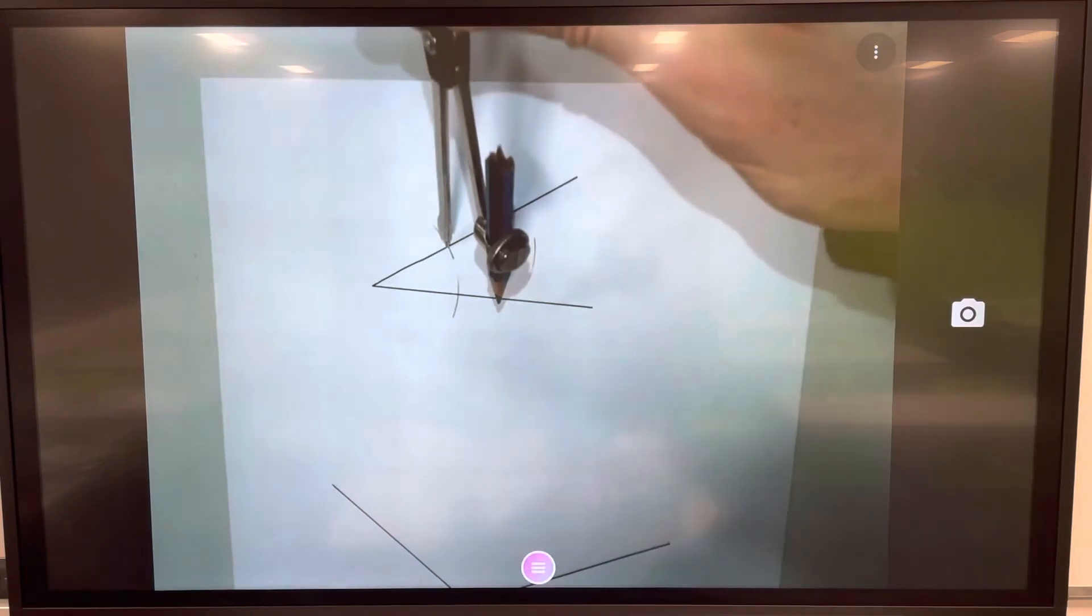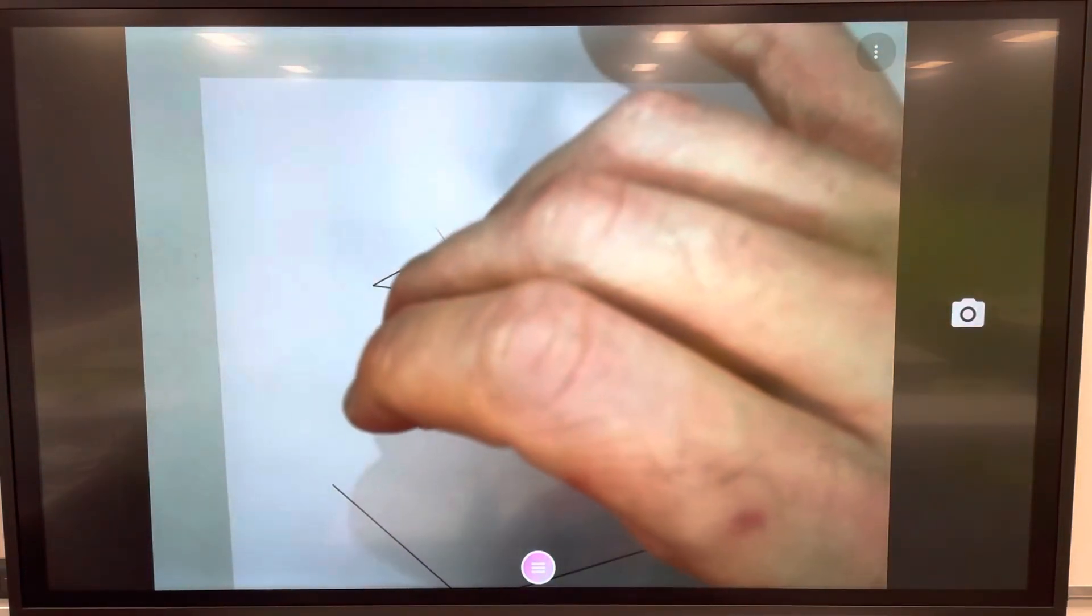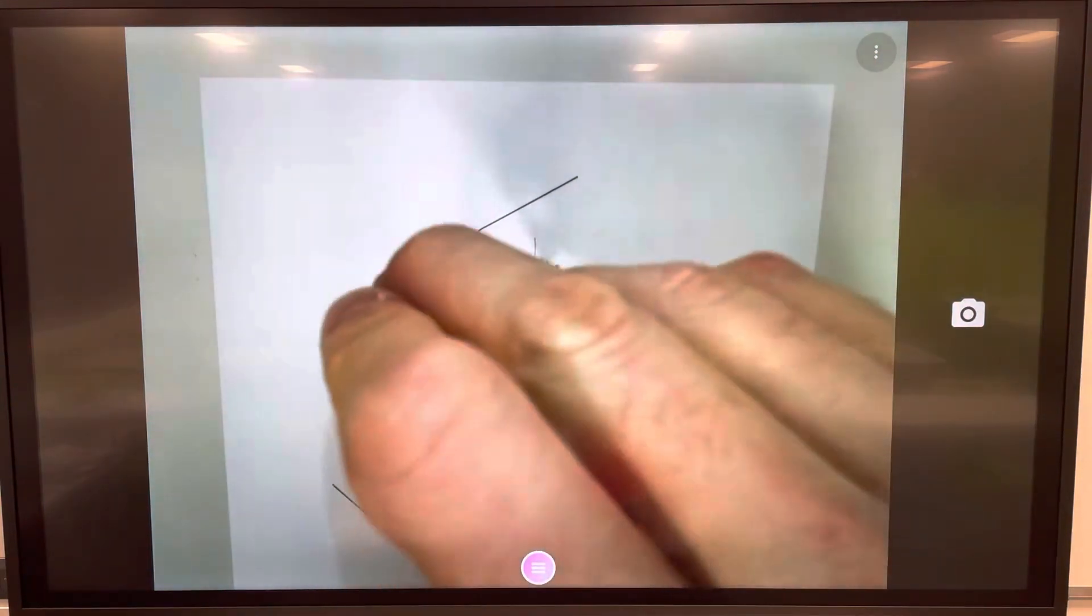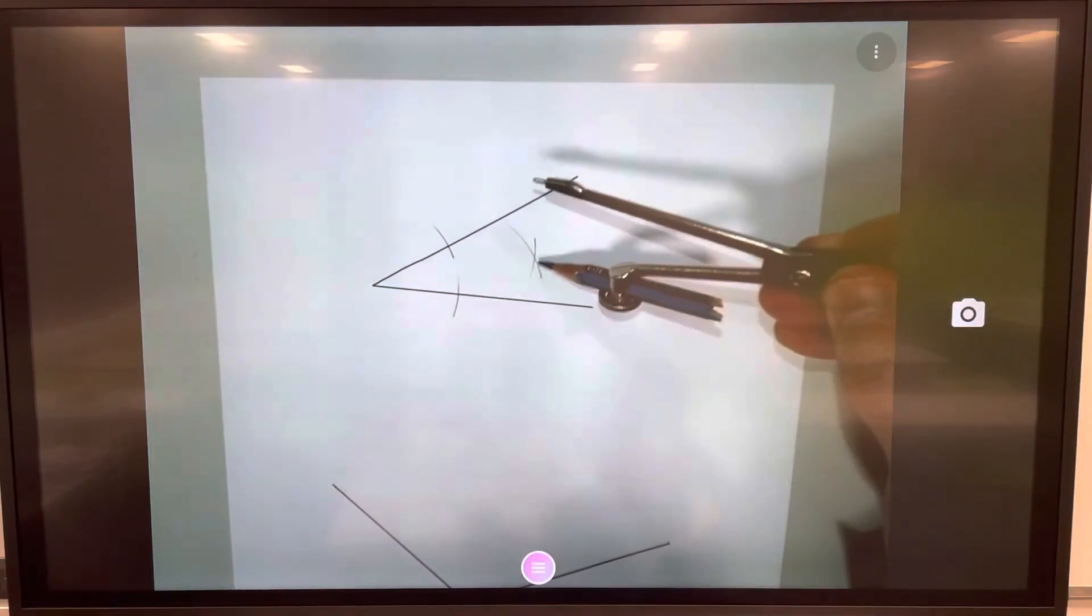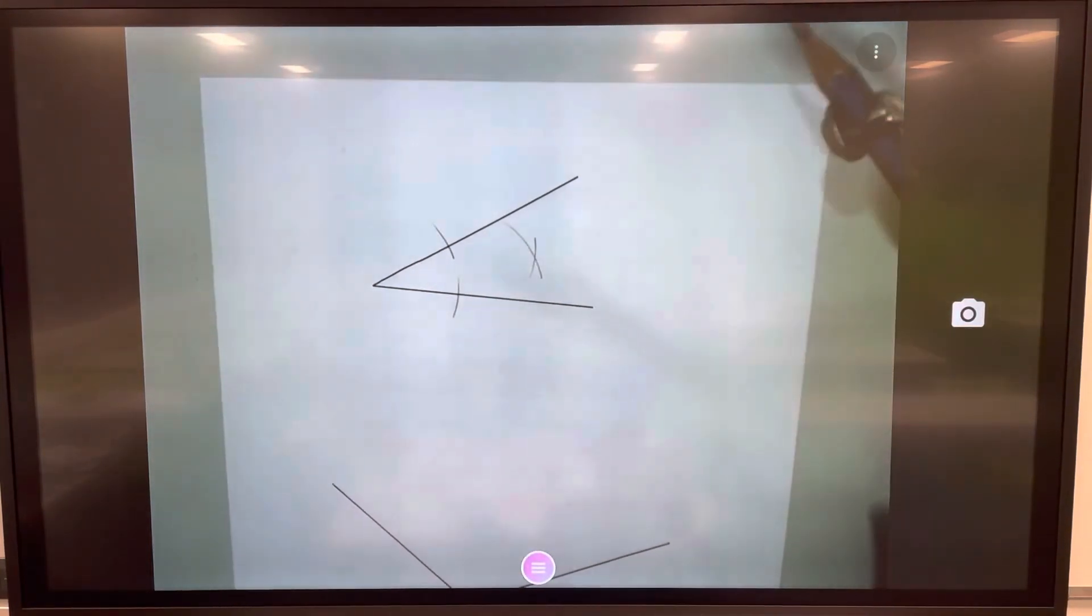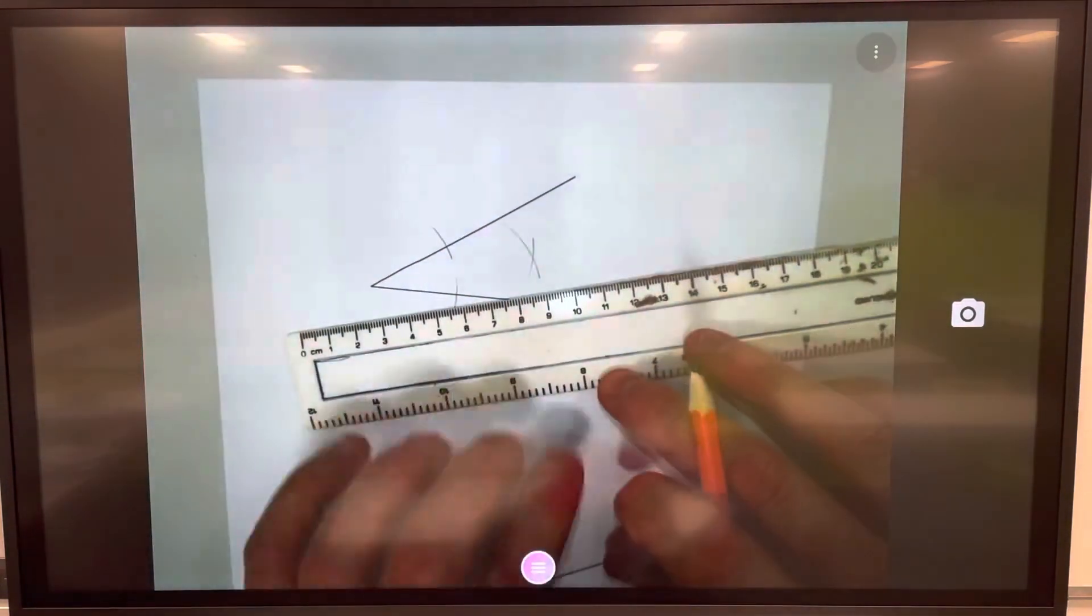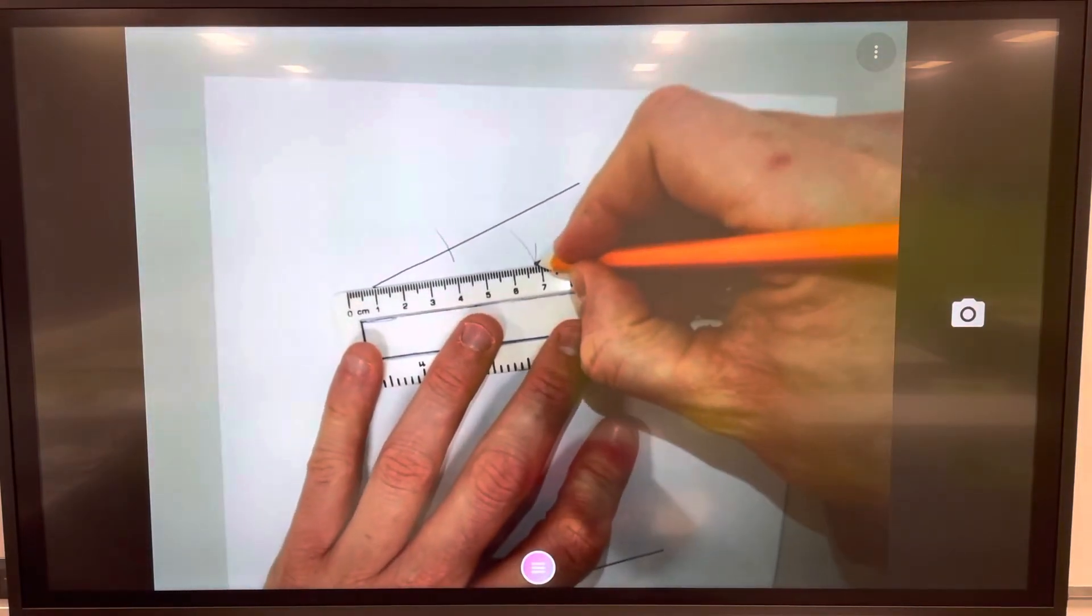I'm going to repeat that from the other side. I'm going to put my sharp point on that point there and rotate to intercept the previous arc that I drew. I've now got this little cross here. Using my ruler and a pencil, I'm going to join up from here all the way down to the mouse's nose of my acute angle.